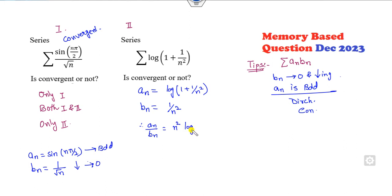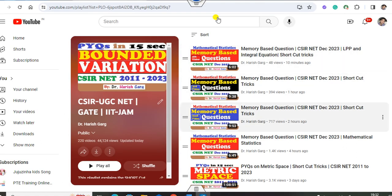What is aₙ/bₙ? It is n² log of this one. If I take the limit as n approaches infinity, it is infinity times zero. Otherwise I can take this function as this one. Now again, what I told you - the shortcut tricks are available in these lectures.